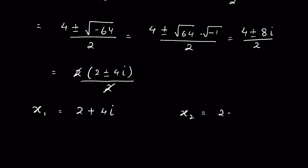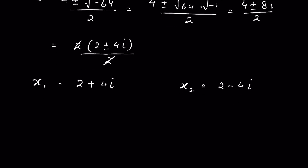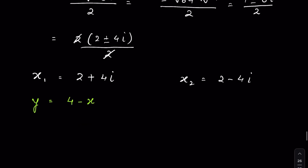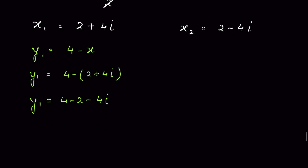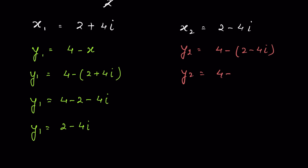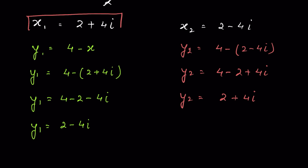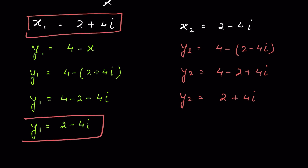When x equals 2 plus 4i, then y equals 4 minus x, so y equals 4 minus (2 plus 4i), giving y equals 2 minus 4i. Again, when x equals 2 minus 4i, then y equals 4 minus (2 minus 4i), giving y equals 2 plus 4i.